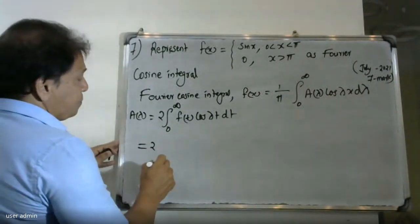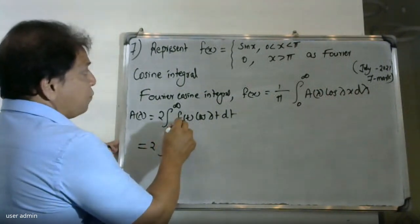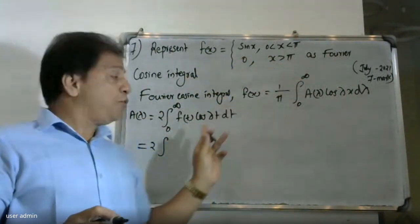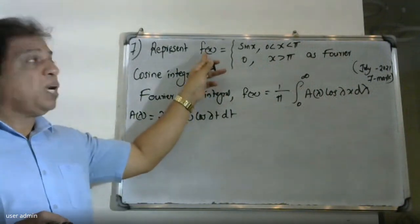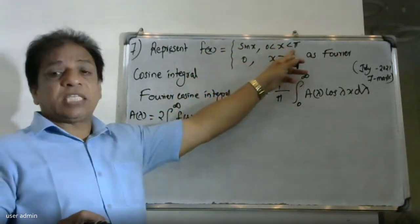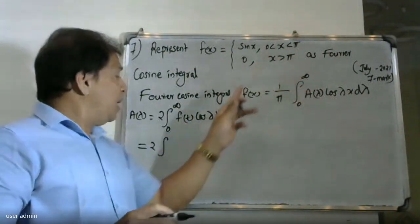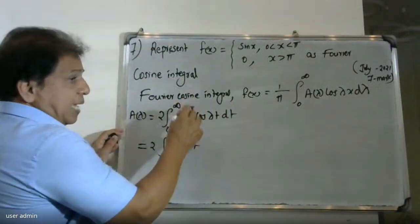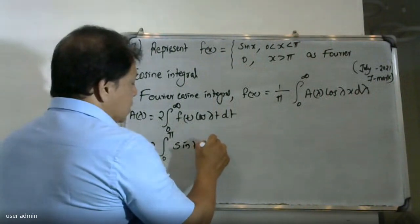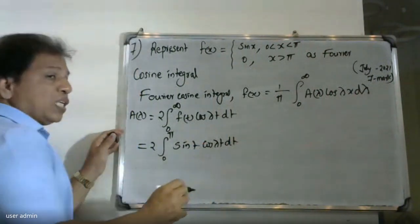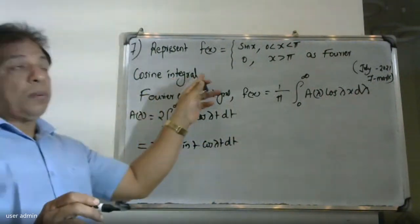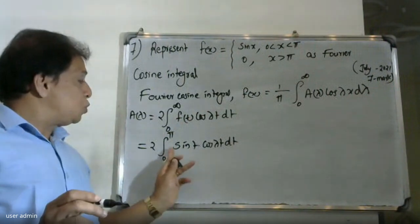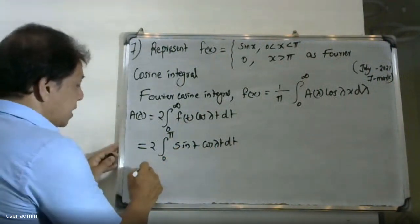A(λ) is equal to 2 times the integral, where we substitute f(t) in the formula. Here f(x) = sin(x) for 0 < x < π, and 0 for x > π, so replacing with f(t): f(t) = sin(t) for 0 < t < π, and 0 for t > π. The limit becomes 0 to π, giving us 2 times the integral from 0 to π of sin(t) cos(λt) dt.